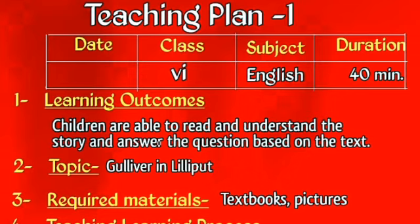Now, point number one: learning outcomes — what we are going to develop in our students in this teaching plan. According to this teaching plan, the learning outcomes are: children are able to read and understand the story and answer questions based on the text. The students of Class 6 are able to read and understand the story and answer questions based on the text. This is the learning outcome of this teaching plan.